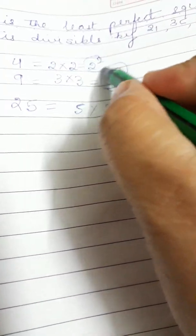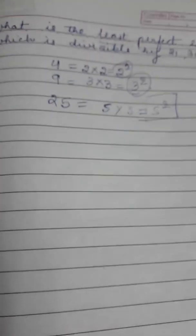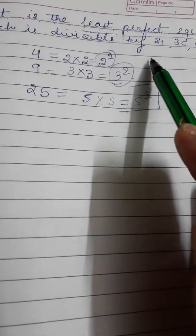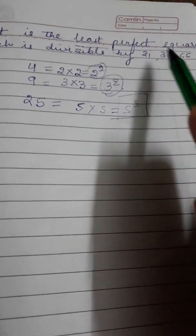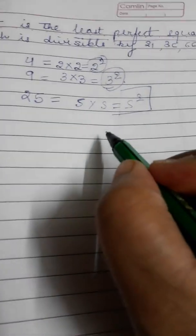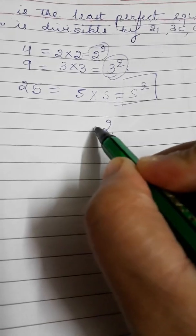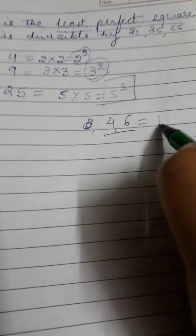So perfect square can be written as square of any number. It has to be a least perfect square, and that least perfect square should be divisible by 21, 36, and 66. I told you last class that let's take two numbers like 4 and 6. What is the LCM? It's 12.